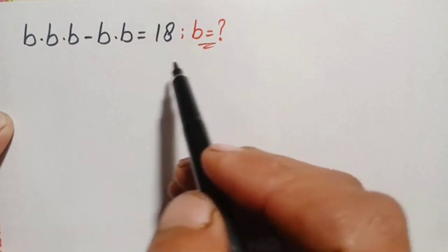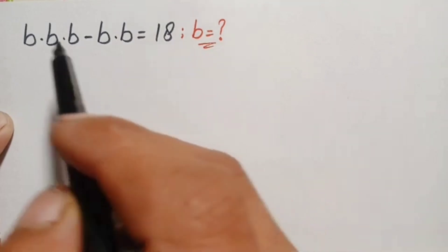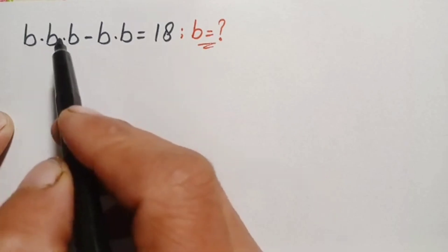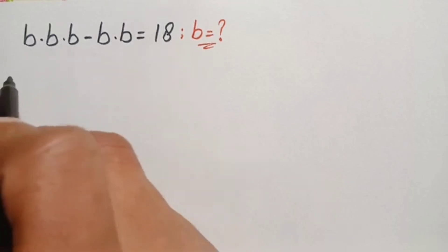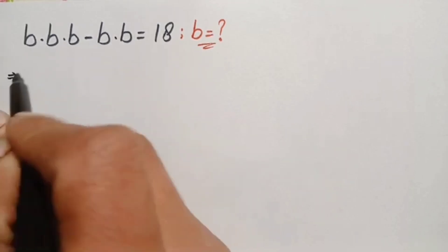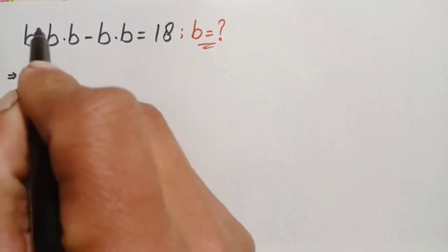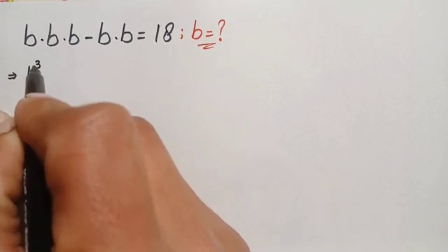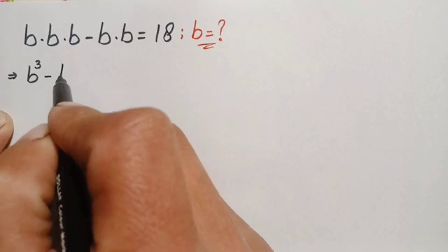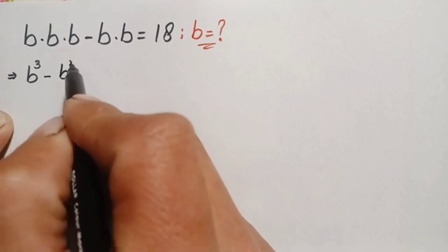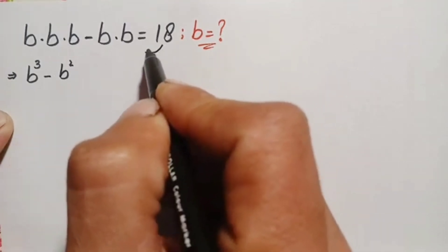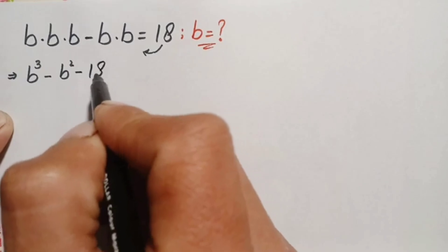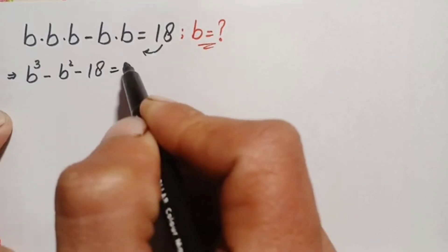Looking at the left hand side, b is multiplied three times so we add the powers: this becomes b cubed. Then we subtract b squared. Moving 18 to the left hand side gives us b cubed minus b squared minus 18 equals 0.